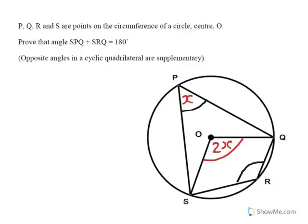Now, the other angle SRQ is half of the reflex angle SOQ. So if I call this one 2y, then this one must be y.